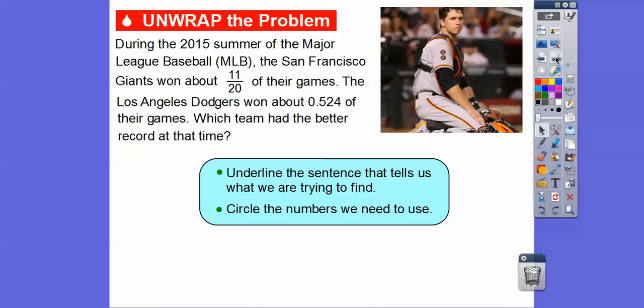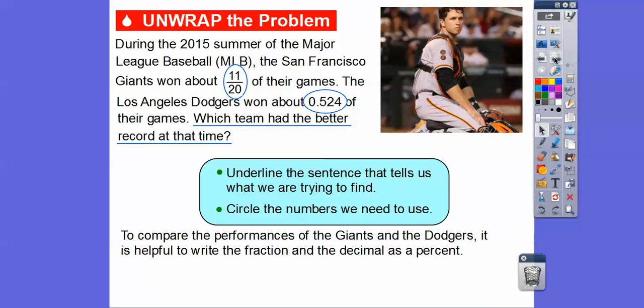Let's answer a couple of questions here. Underline the sentence that we're trying to find out. It's always the last one right here - which team had the better record at the time? Then circle the numbers that we're going to use. We're going to use this 11 out of 20 and the 0.524.